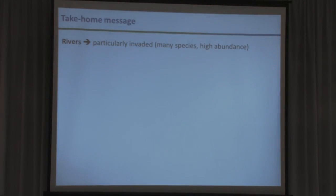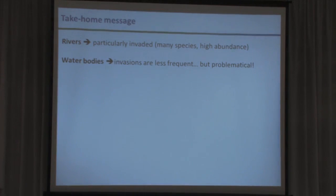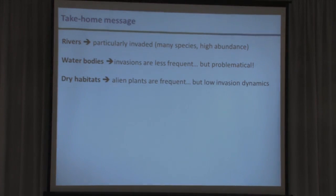What are the conclusions? Rivers are particularly invaded — they seem to be the most problematic habitat with many species, high abundance, and high impact for some species. Water bodies are less frequently invaded, only about 7%, but when an invasion occurs, it generally represents a high-impact problem. In dry habitats, we also have very frequent cases of occurrence, but the invasion dynamic seems to be really slow.